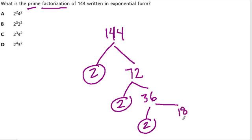18 is equal to 9 times 2, and 2 is another even number. And in fact, 9 is 3 times 3.